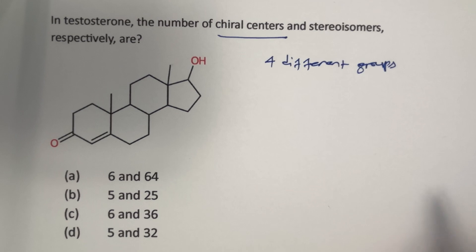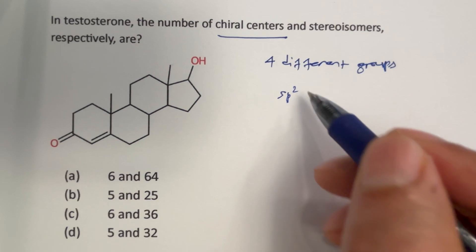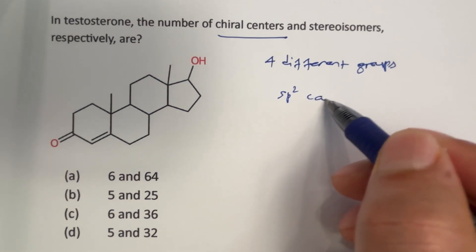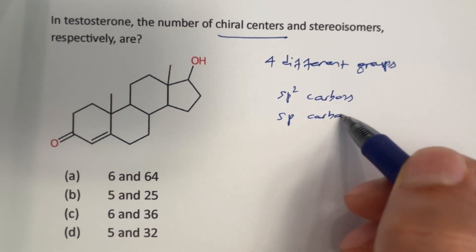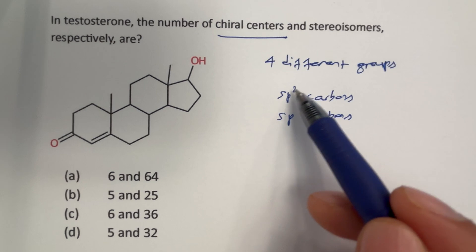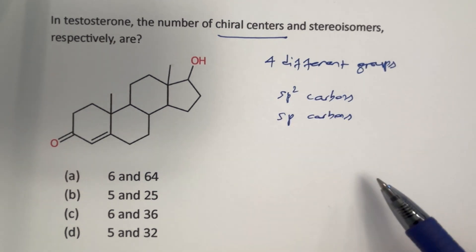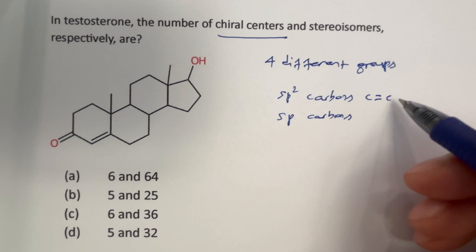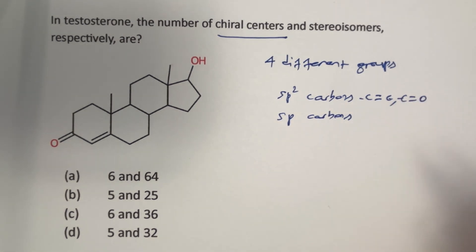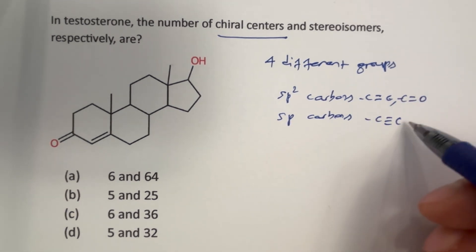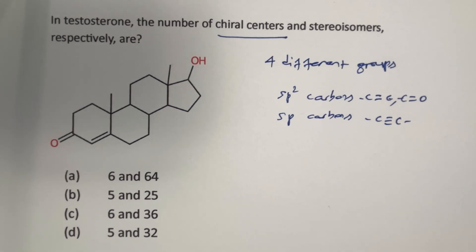So eliminate the ones that are not. We can eliminate sp2 carbons and also sp carbons. Here we don't have sp carbons, but we do have sp2 carbons in this structure. So anytime you see carbon carbon double bond or carbonyl group, you should eliminate those ones. And also if you see a triple bond, carbon carbon triple bond, you should eliminate those ones as well.